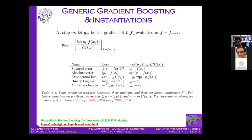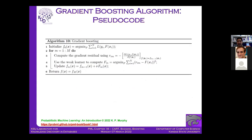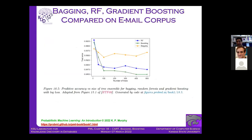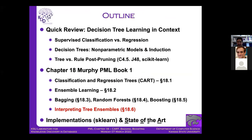Murphy shows that using squared error, absolute error, exponential loss, binary log loss, or multi-class log loss all yield different gradient boosting algorithms. The generic gradient boosting algorithm computes a gradient residual, uses the weak learner to compute a new f_m, then updates the ensemble. Gradient boosting with decision trees outperforms random forests and bagging, with all three showing improvements over a single tree as the number of trees increases — up to a point of diminishing returns — on the email corpus dataset Murphy uses.